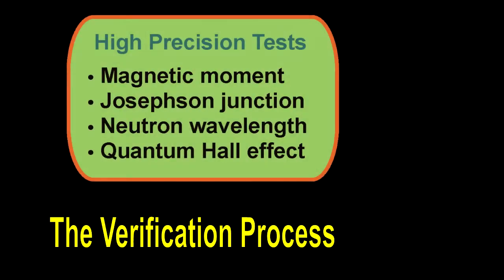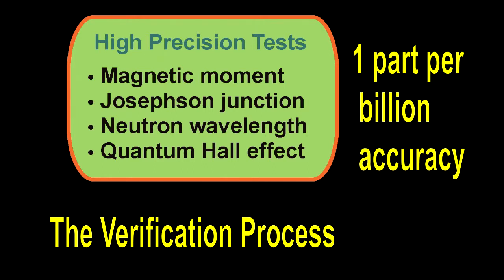Now, after more than 100 years, we have also made some high-precision tests of quantum theory. Some of the famous tests are the magnetic moment of electrons and muons, Josephson Junction frequencies, the wavelength of neutrons, and the quantum Hall effect. These experiments agreed with theory to better than one part per billion.